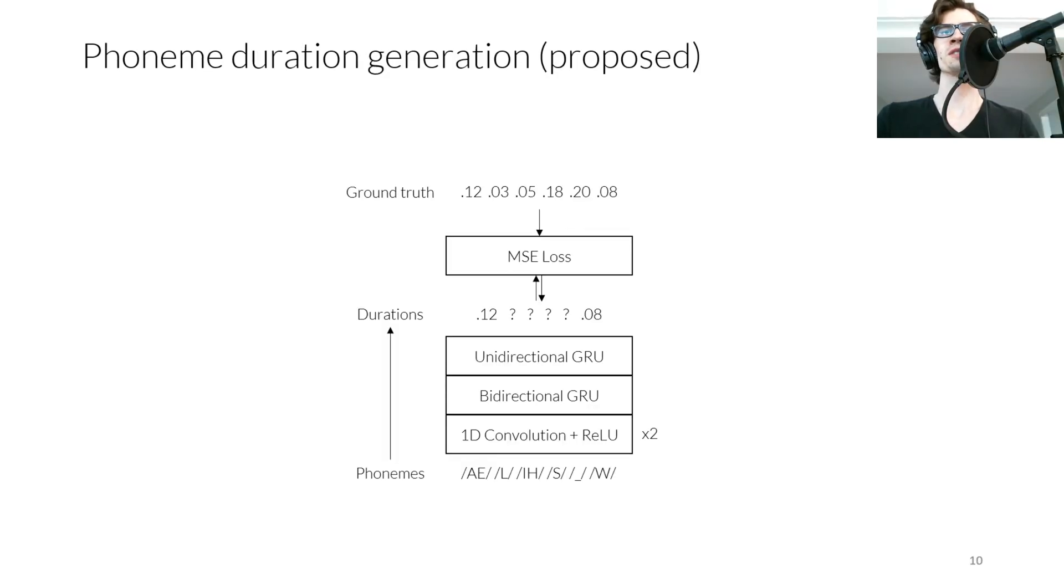To generate phoneme durations from text, we use a small neural network consisting of two convolution layers, a bidirectional layer, and a unidirectional layer. We use mask training where some ground truth durations are provided. This allows us to condition the model on the phoneme durations of the preceding and following speech. We experimented with using autoregression and a categorical loss, but found that the predicted distribution was unimodal for a single speaker with a consistent reading style. Therefore, we use mean squared error loss. Our duration generator is not multispeaker, but can train within a half hour on a small amount of speech.